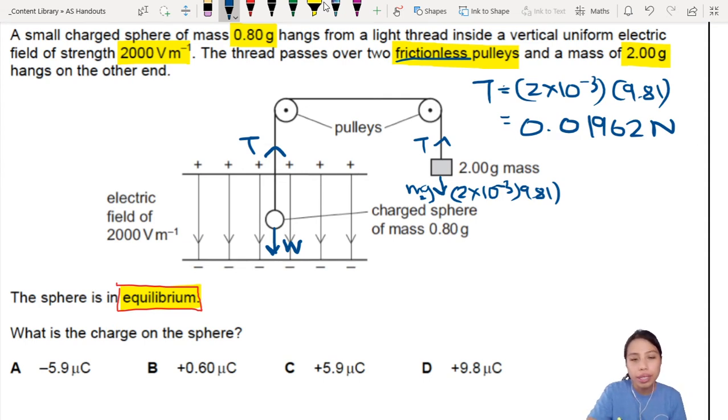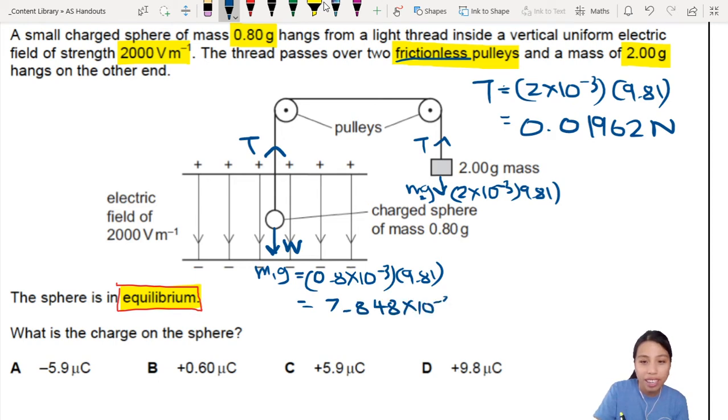And then if you look at the weight down here, this is also mg but a different m. Call it m1g. This weight of this charged sphere by itself is 0.8 in kgs times 9.81. So 0.8 times 9.81. That is also very small. 0.848 times 10^-3 N. Very very small.